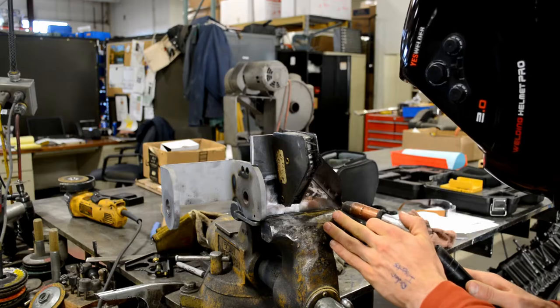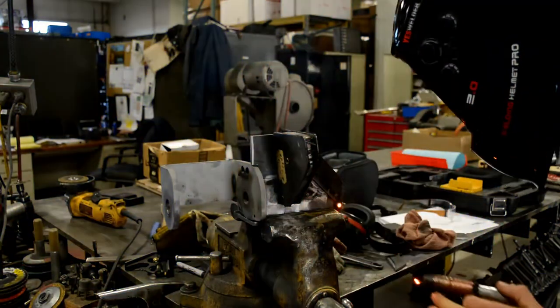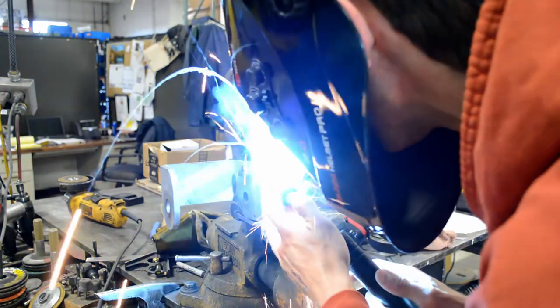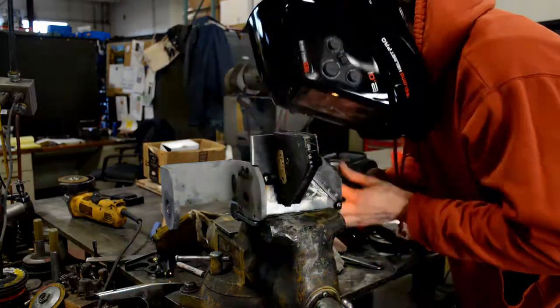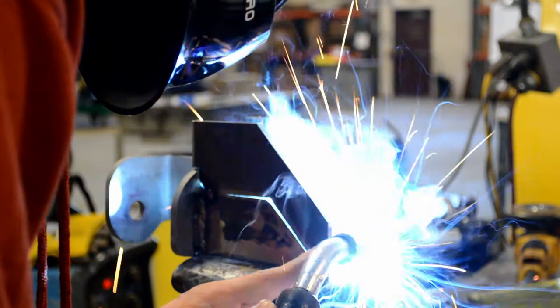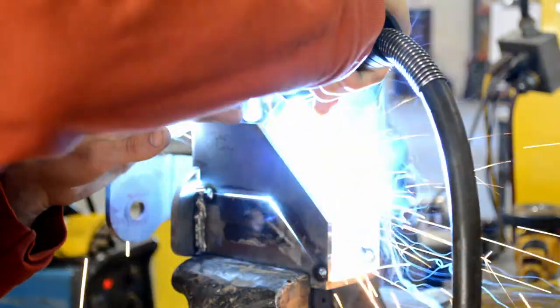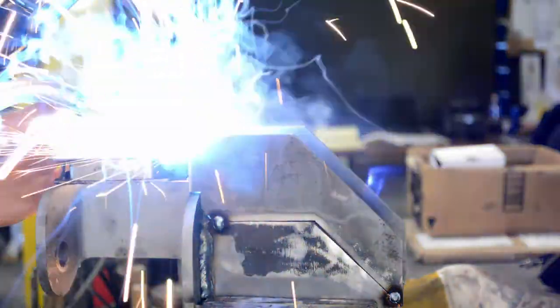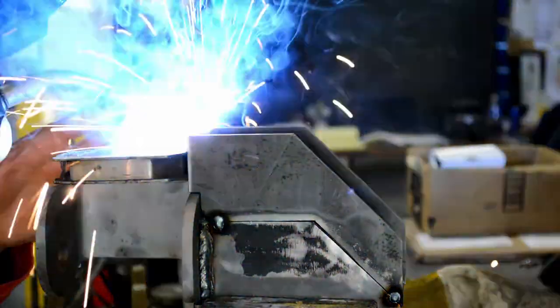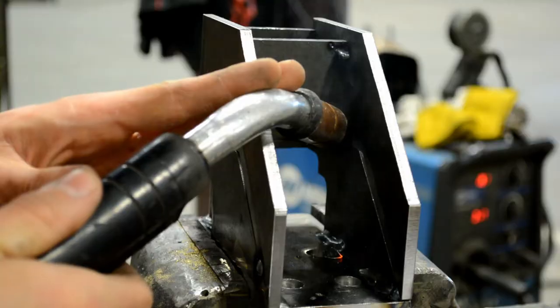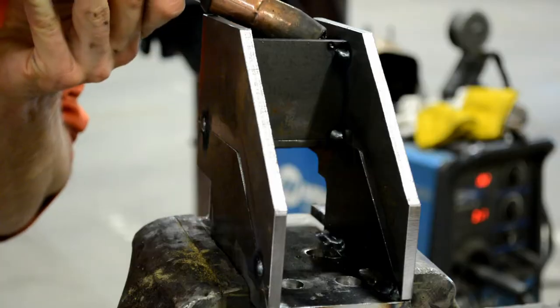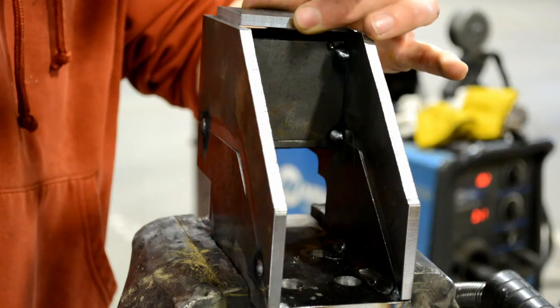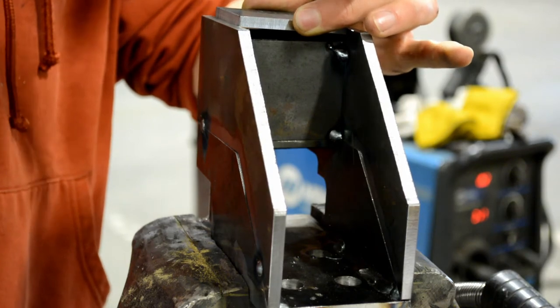And it was at this point when everything was pretty much done that I thought, you know what would be great? A last minute design change. I originally designed this bumper to be just a bit narrower than the rear of my truck, and after thinking about it a little more at the very end, I thought, I actually want this thing to be a little bit wider than the rear of my truck. So I devised a plan pretty quickly to add some extension plates to each of the end caps, weld them on, blend them in, and I figured it'll look pretty good.